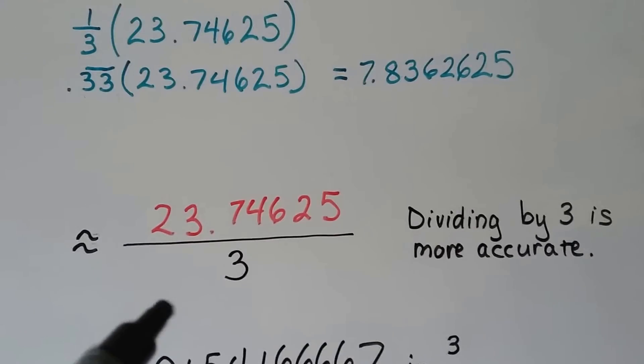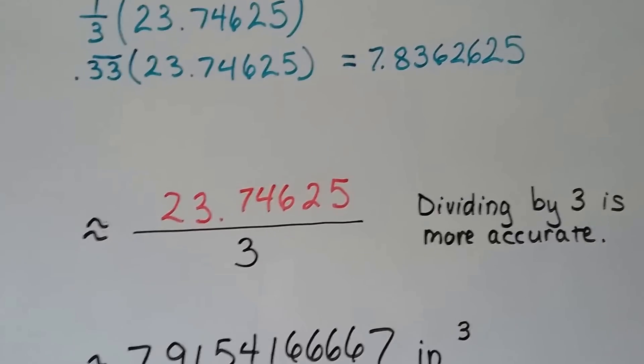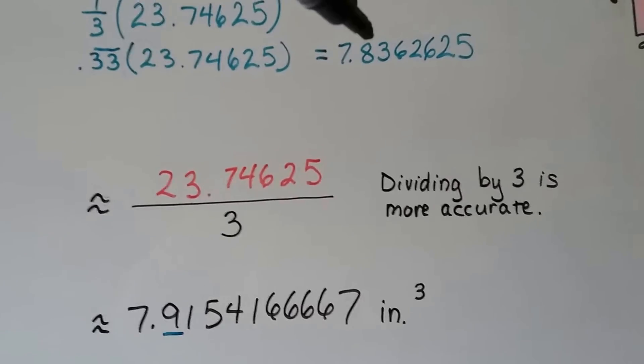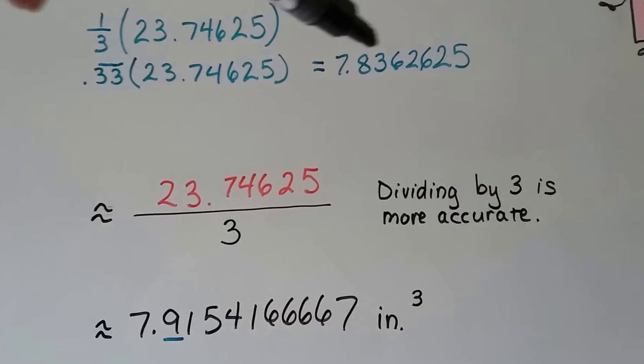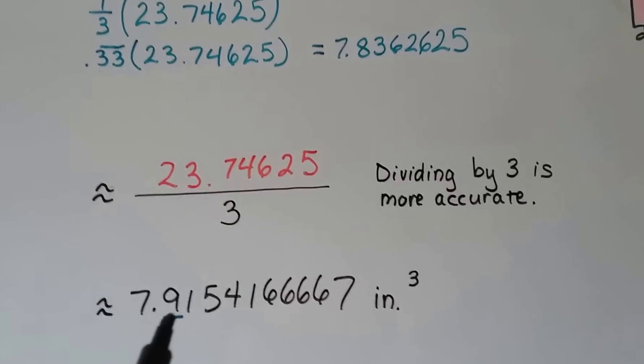Division is more accurate. If we do 23.74625 divided by 3, we get this number. And look at the difference in the answers.